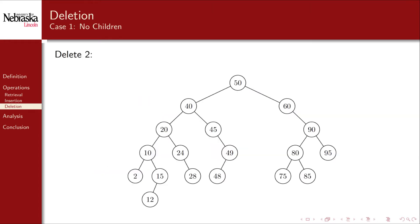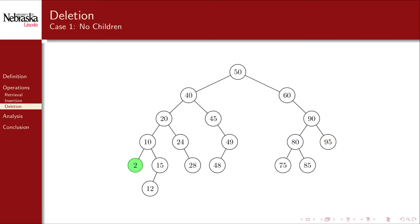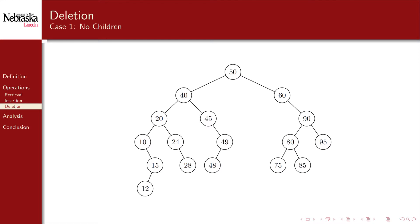Let's take a look at several cases. Suppose we wanted to delete the node containing key 2. First we find it — since it has no children, simply removing it causes little disruption. To do this, we only need to change the left child reference of its parent node. Setting it to null would remove the node from the tree.